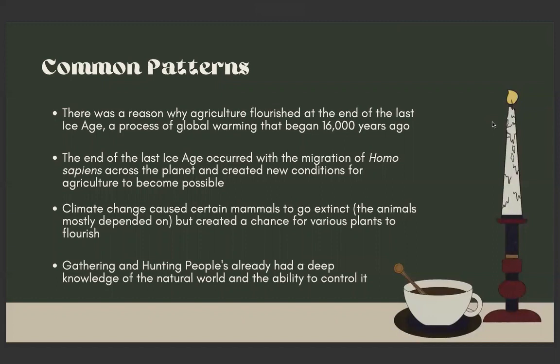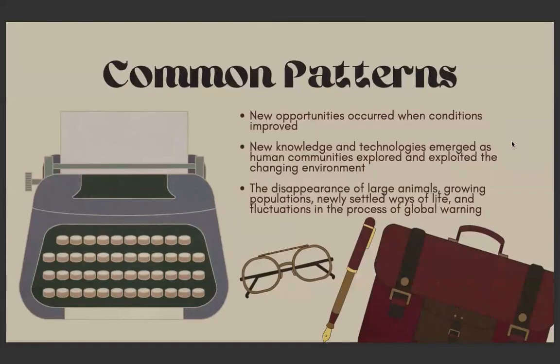Some common patterns shown in agricultural revolutions were: there was a reason why agriculture flourished at the end of the last ice age. A process of global warming began 16,000 years ago. The end of the last ice age occurred with the migration of Homo sapiens — the category of human species across the planet — creating new conditions for agriculture to become possible. Climate change caused certain mammals to go extinct, the animals mostly depended on, but created a chance for various plants to flourish. Gathering and hunting peoples already had a deep knowledge of the natural world and the ability to control it. There were new opportunities when conditions improved, and new knowledge and technologies emerged as human communities explored and exploited the changing environment. The disappearance of large animals, growing populations, newly settled ways of life, and fluctuations in the process of global warming all played a role.